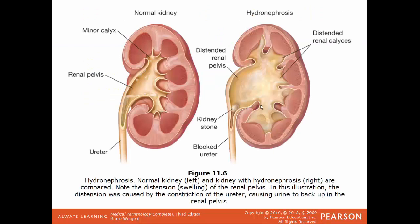Here's an illustration of hydronephrosis. On the left is the internal anatomy of a normal kidney; on the right, one with hydronephrosis. Normally, urine collected in each of the pyramids is deposited in the renal pelvis and continues on to the ureter and into the bladder. But with hydronephrosis, the drainage isn't working correctly — usually due to a blockage like a kidney stone — so fluid builds up in the renal pelvis, causing the pelvis and the organ to become distended.